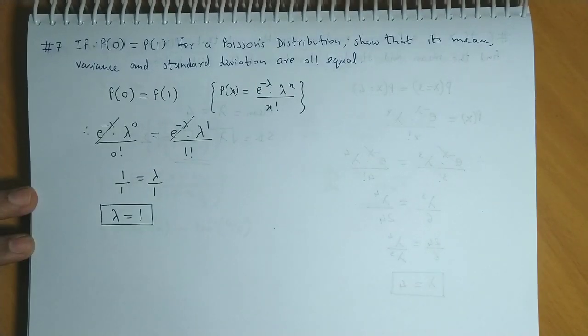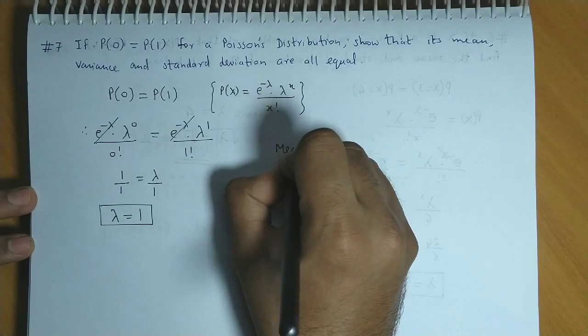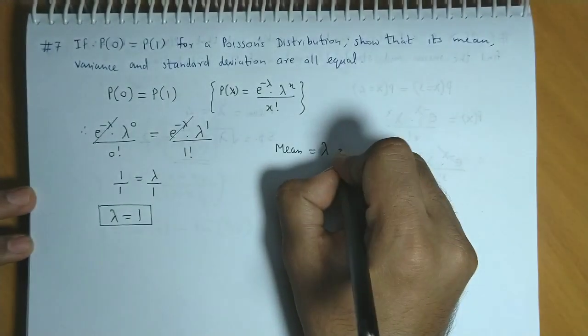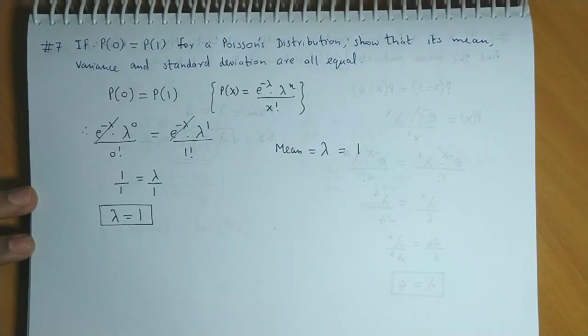Now, we have to look at mean, variance and standard deviation. We know that for a Poisson's distribution, mean is nothing but lambda, and lambda's value is 1.